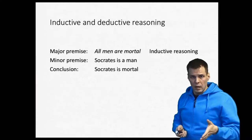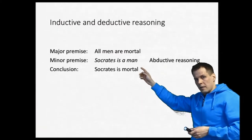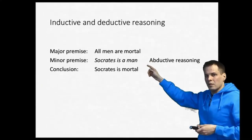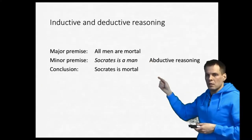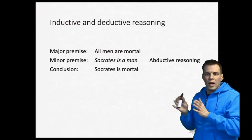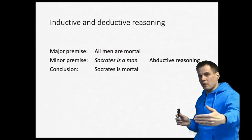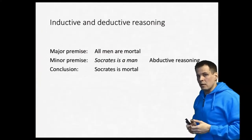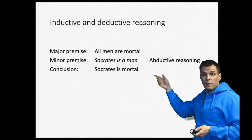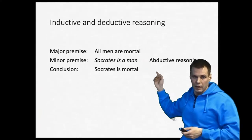For completeness, abductive reasoning is the case where we know that Socrates is mortal and that all men are mortal, and we infer the minor premise — that maybe Socrates is a man. Abductive reasoning is reasoning to the best explanation. It is even weaker than induction and is not commonly used except for generating hypotheses, where everything is allowed as a starting point.